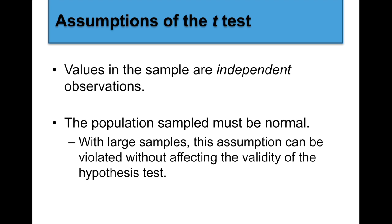Let's talk about some of the assumptions of the t-test. The values in the sample need to be independent observations, and the population you're pulling your sample from must be normal, or at least assumed to be normally distributed. With larger samples, this assumption can be violated without really affecting the validity of your hypothesis test. If you're nervous about whether your population is really normal, pump up the sample size.